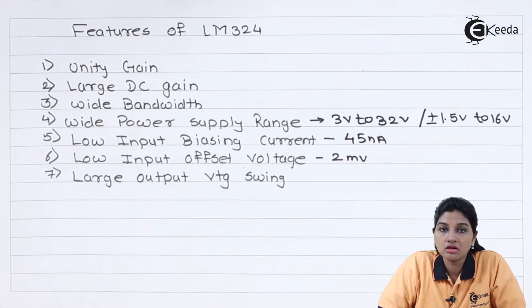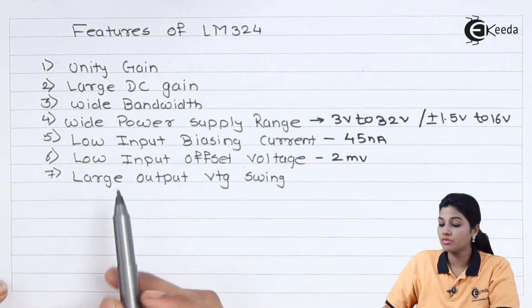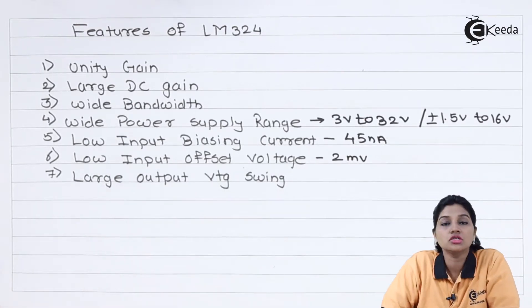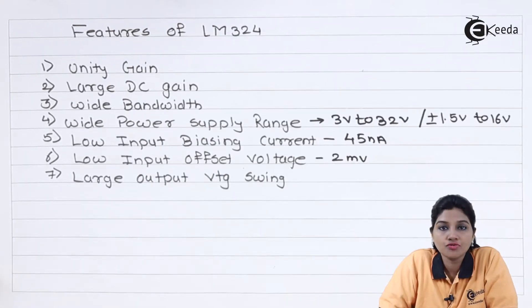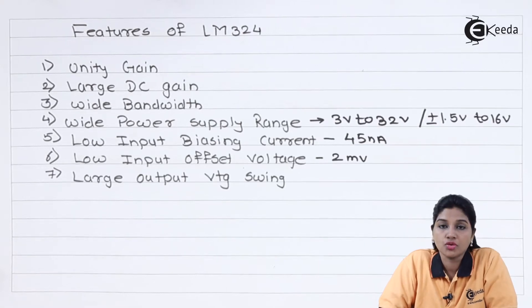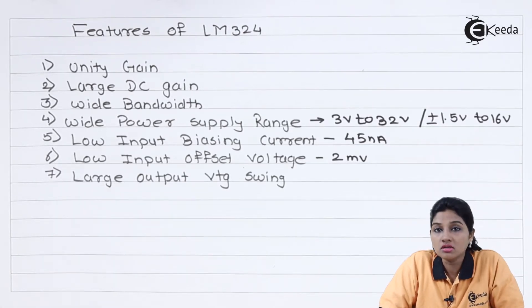Then the IC provides low input biasing current which is approximately equal to 45 nA whereas it provides low input offset voltage which is equal to 2 mV as well as low input offset current. The next or last feature of LM324 is it provides large output voltage swing. The IC provides internal frequency compensation, internal temperature compensation as well as offset nulling capacity.